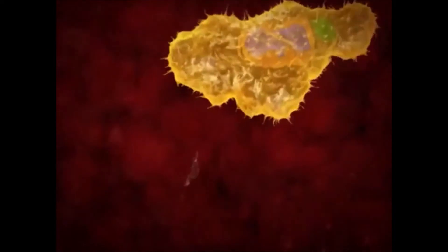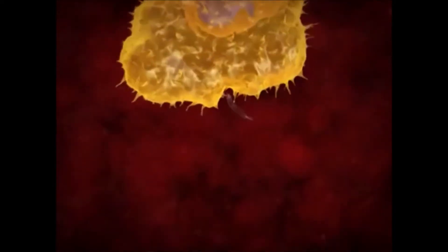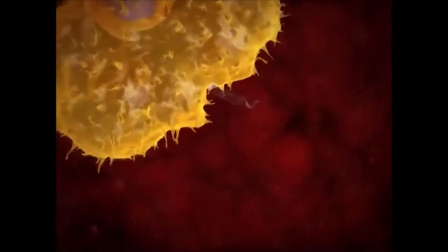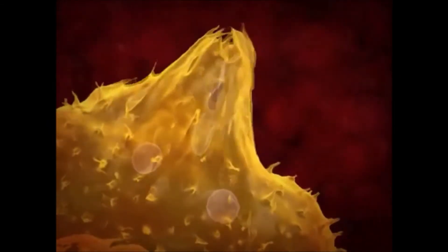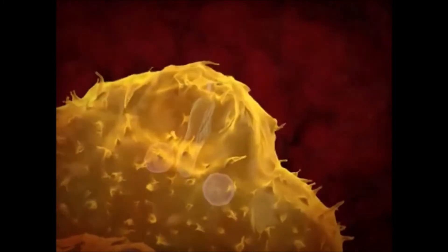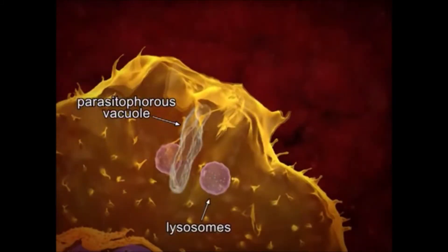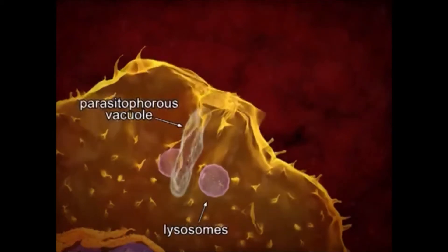In this example, the attachment of the tripomastigote form of the parasite to the macrophage surface is observed. The process of internalization via phagocytosis begins with the formation of pseudopods. During and after the internalization of the parasite, the parasitophorous vacuole assembles. Host cell lysosomes migrate toward the internalization region and fuse with the parasitophorous vacuole.